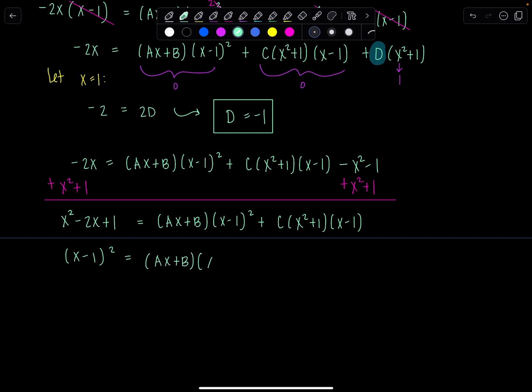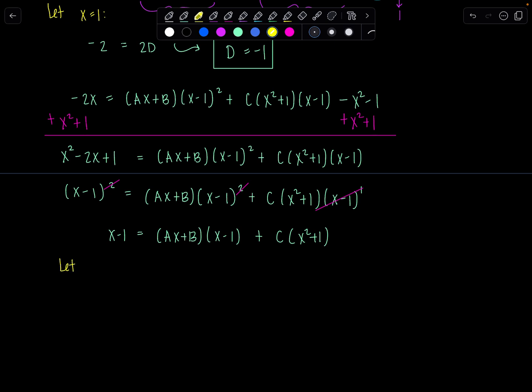And before you get too excited and think, let me just cancel out the whole x minus 1 quantity squared. Notice here on this last term, we only have 1 x minus 1. So don't cancel more than what you have. So just cancel 1 here, 1 here. Now it's completely gone here. So then we have x minus 1 equals ax plus b times x minus 1 plus c times x squared plus 1. That's right. One more time. Let x equal 1. And then we have 0 equals 0 plus c times 2. So c is 0.